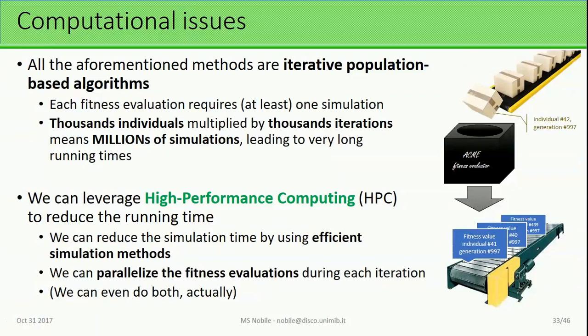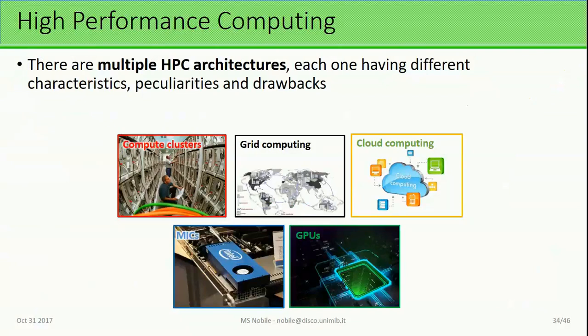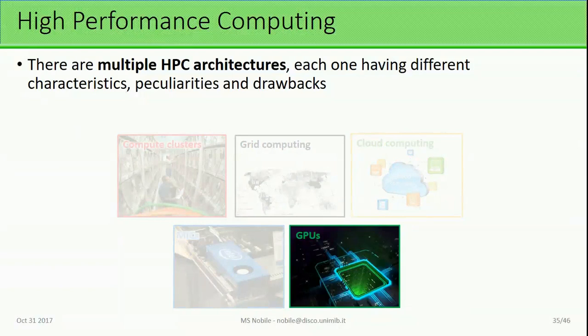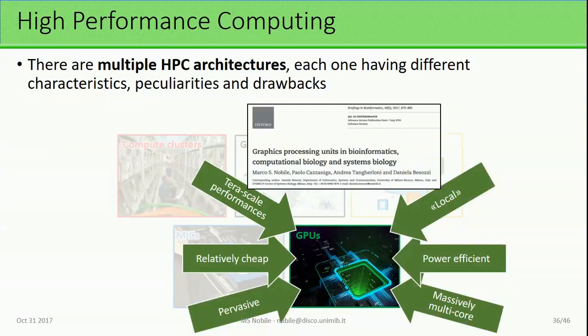Naturally, all the methodologies described so far are computationally intensive because they are population-based algorithms. Each generation requires hundreds of fitness evaluations repeated across all iterations, which can easily amount to millions of simulations executed sequentially, leading to very long running times. We therefore need alternative architectures. Since all fitness evaluations within a single generation are mutually independent, we can leverage high-performance computing — for instance clusters — to distribute evaluations. Among the available architectures, we focused on GPUs because they are local, relatively cheap, power-efficient, pervasive, and massively multicore.